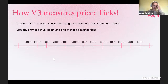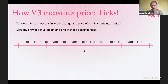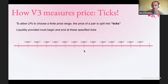You can imagine it looking something like this. Every tick is one of these powers. Tick zero is in the middle, and what that represents is a price of 1.0001. Tick number one is 1.0001 to the power of one, and so on. That goes off in both directions.